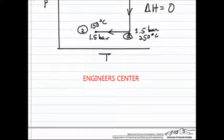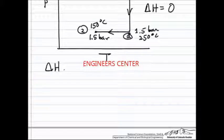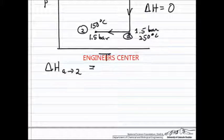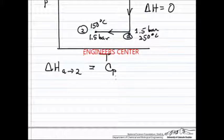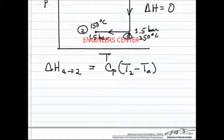So then we're left with calculating ΔH for the second step, ΔH going from A to 2, which is going to be heat capacity, which is constant, times the final temperature minus the initial temperature.